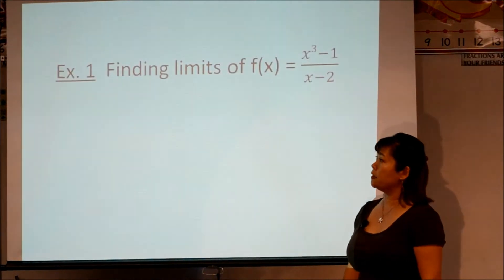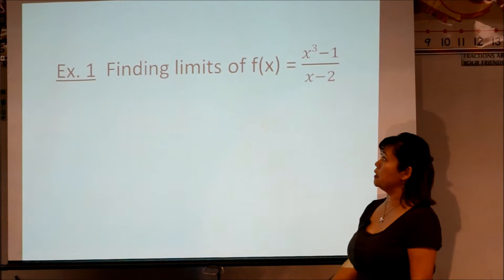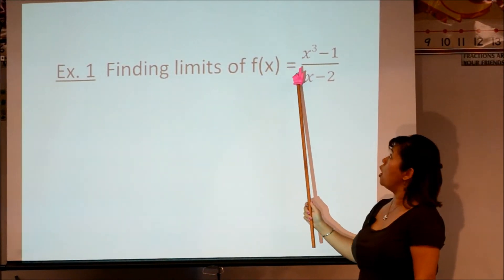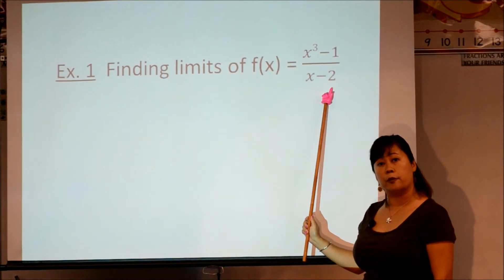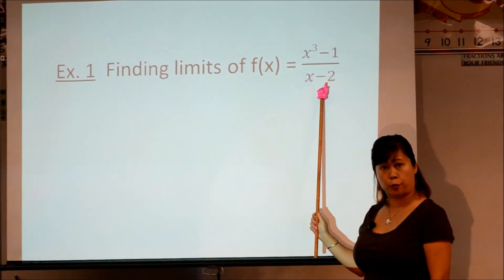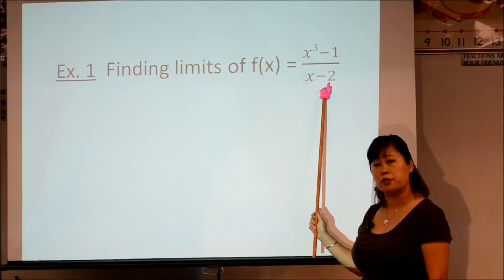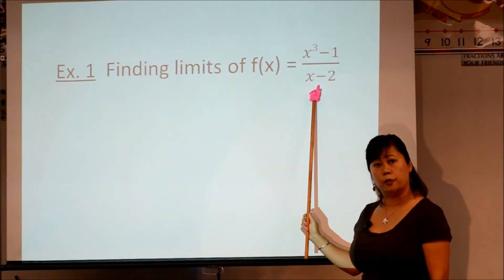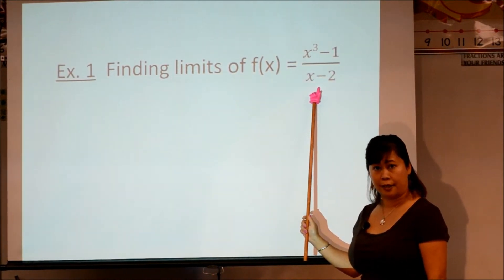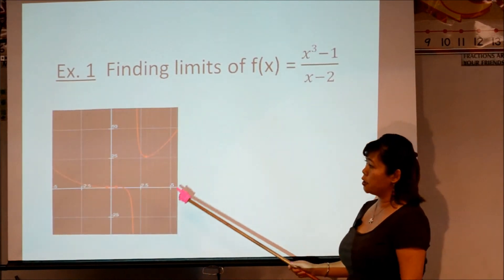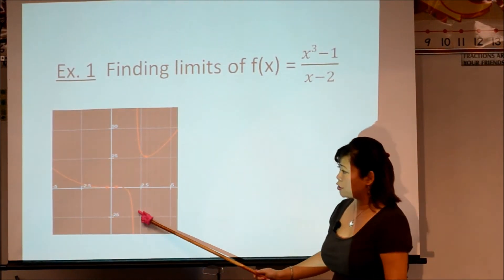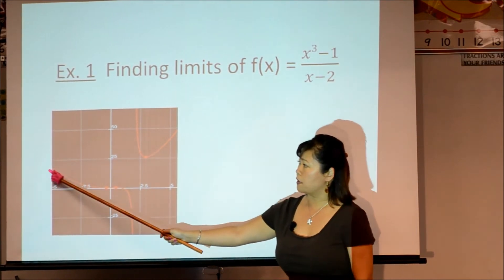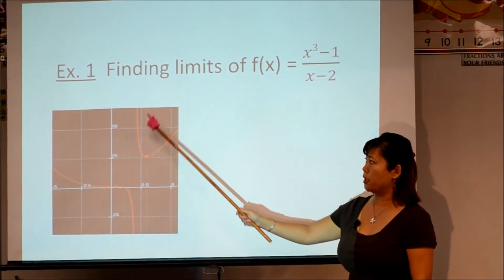Example one: finding the limits of f(x) = (x³ - 1) / (x - 2). From pre-calculus, we drew this graph — it's a rational function. We set the denominator equal to zero to find the vertical asymptote (VA). Here's our function, and at x = 2 there is a vertical asymptote. We have the left side and the right side of the function.